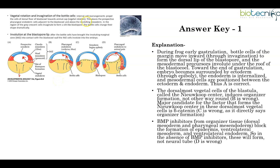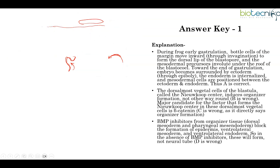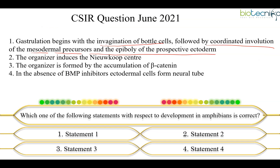Several movements are involved in gastrulation. First is invagination, after which cells migrate as a layer — invagination is the forcing of a layer inside. Involution is where cells migrate as a layer towards the inside; the entire mesoderm will involute in the region of the gray crescent cells. Finally, there is convergent extension: a thicker layer becomes a thinner but more elongated layer as cells converge in one direction and extend in another.